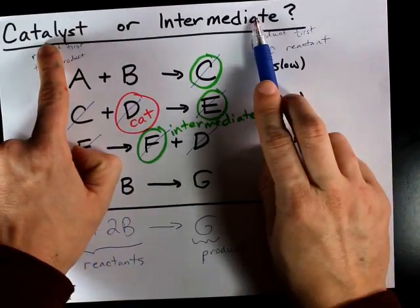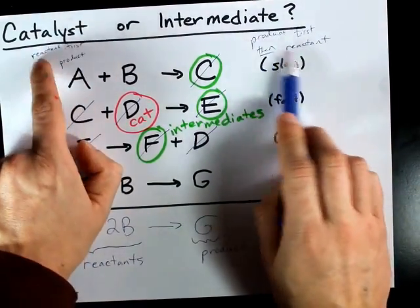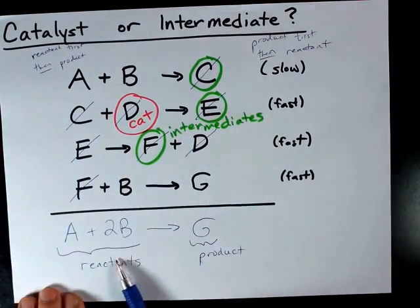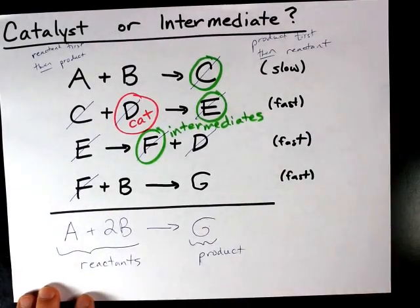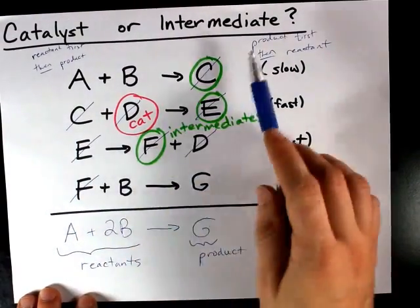Note that because both of these are products and reactants at different times, that's why they canceled. Reactants stay in the overall reaction. Products stay in the overall reaction. Intermediates and catalysts cancel.